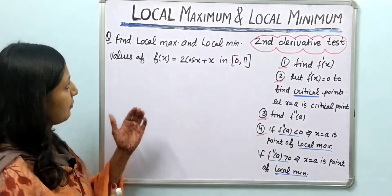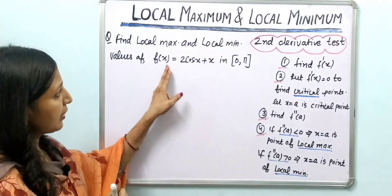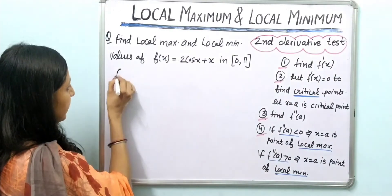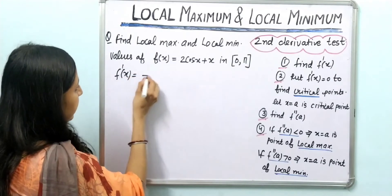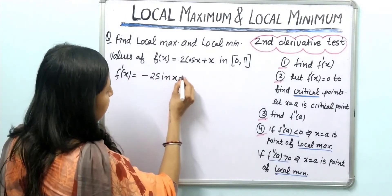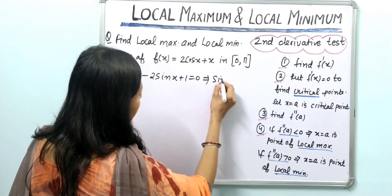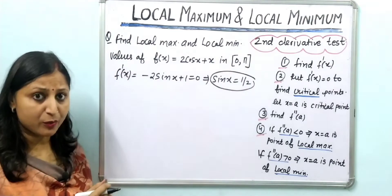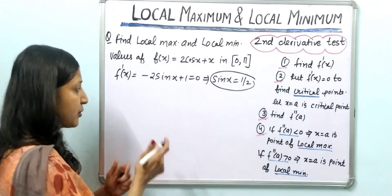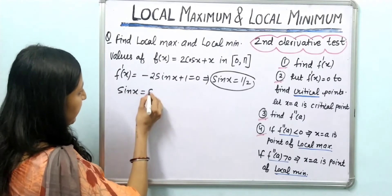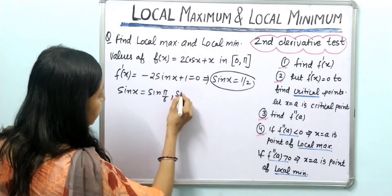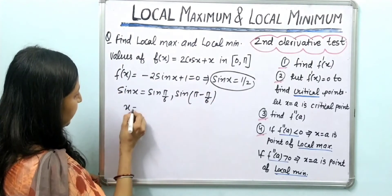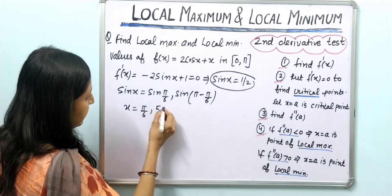Now let us do one more question: find local maximum and local minimum values of f(x) = 2cos x + x on the interval (0, π). Finding critical points: f'(x) = -2 sin x + 1 = 0, so sin x = 1/2. Since sin x is positive in both the first and second quadrants within (0, π), we get two critical points: x = π/6 and x = 5π/6.